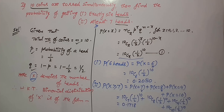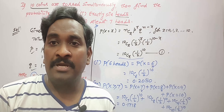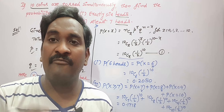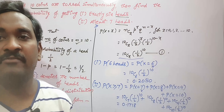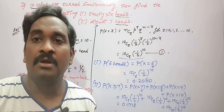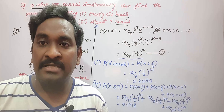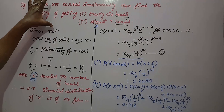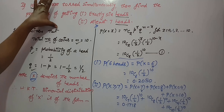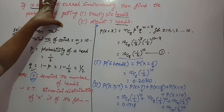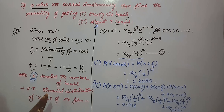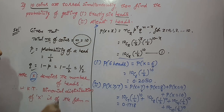Remember: in any random experiment, the probability of any event must lie between 0 and 1. Probability never becomes negative and never exceeds 1. One very important point: even though the problem statement does not mention which distribution to apply, you must recognize why binomial distribution is used here — whenever the number of items n is given in the statement, apply binomial distribution. In the next video I will give more examples on binomial distribution. Thank you very much.